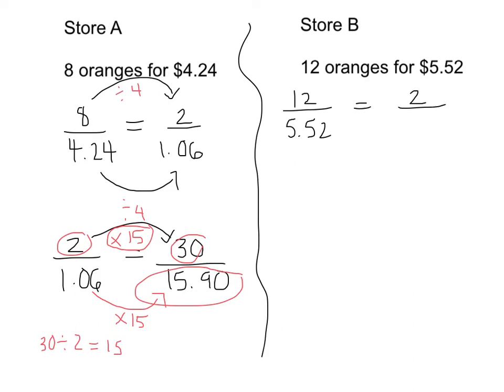Once again, how do we get from 12 to 2? We know the number is getting smaller, so we're dividing. We can do that in our head. 12 divided by 6 is 2.